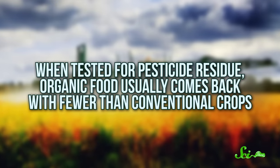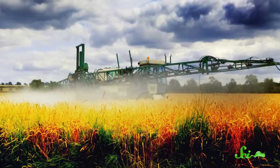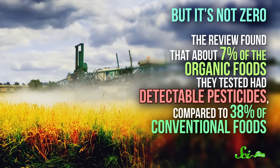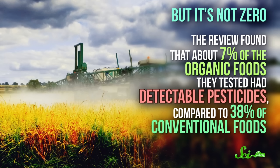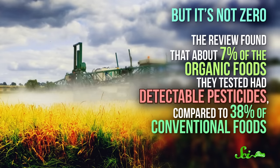When tested for pesticide residue, organic food usually comes back with fewer than conventional crops, which makes sense. The whole idea is to use fewer inputs, including pesticides, to grow food. But it's not zero. The review found that about 7% of the organic foods they tested had detectable pesticides, compared to 38% of conventional foods. It's possible these small differences matter, but from everything we currently know, it's unlikely.